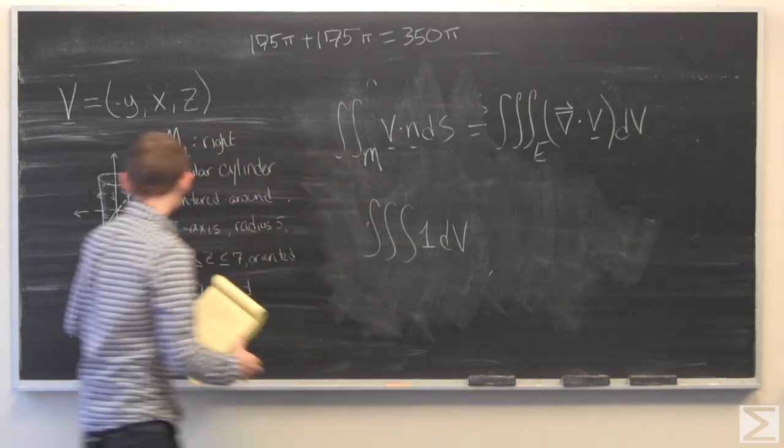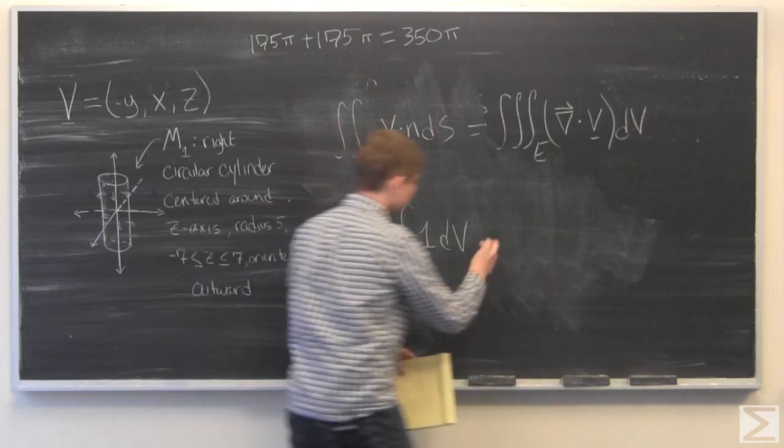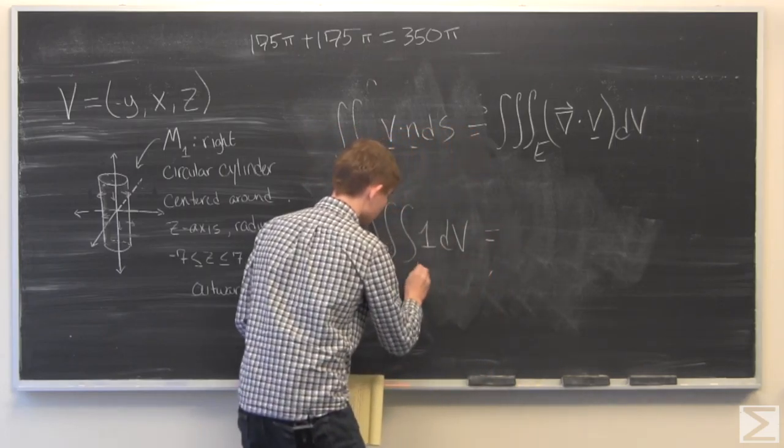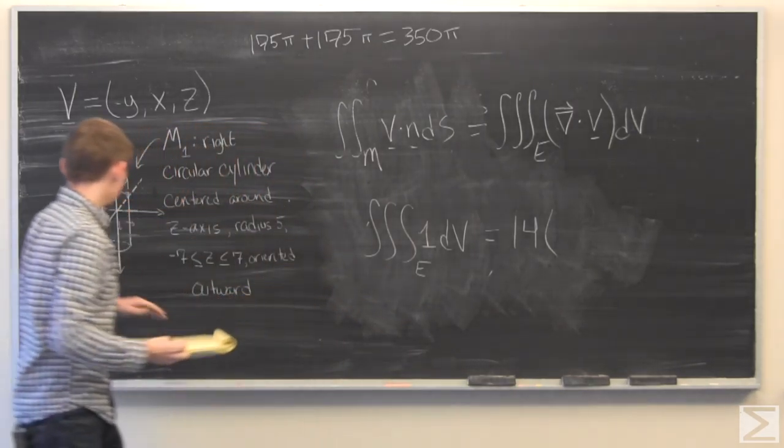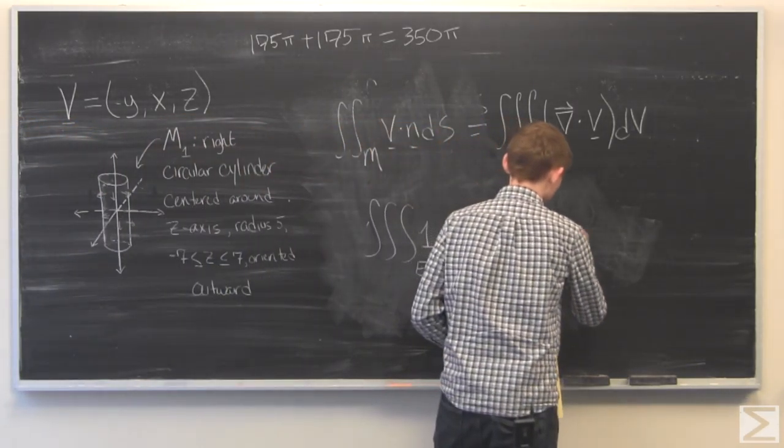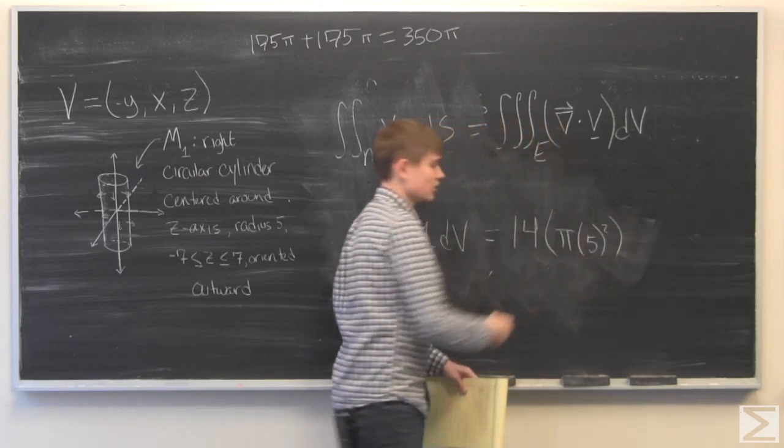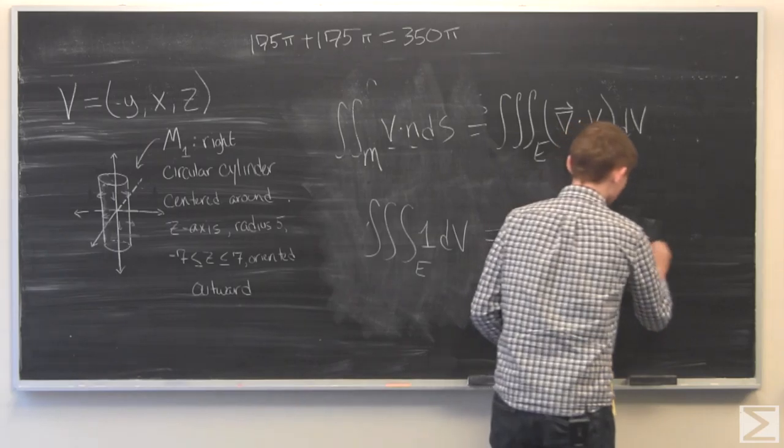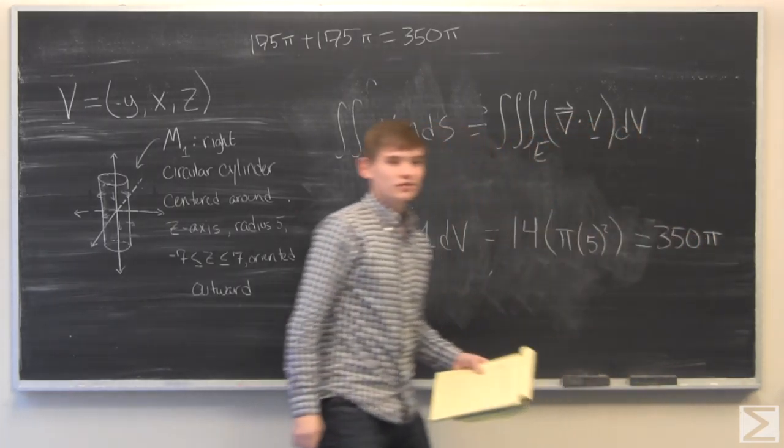It's just going to be the height, which is 14, times the area of the disk at the bottom, which as we saw before is pi times 5 squared. And this is equal to 350 pi.